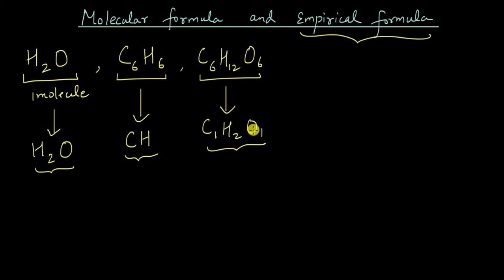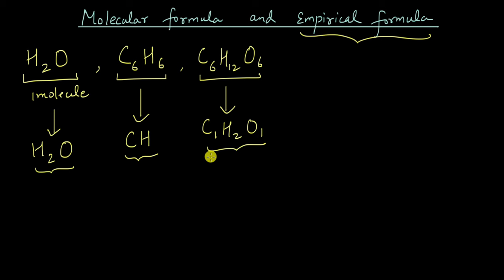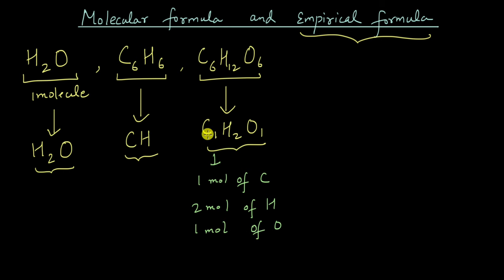What can we do with this empirical formula? Well, one thing we can do is find what percentage by mass of carbon, hydrogen, and oxygen is contained in a sample of glucose. We know that this formula tells me that if I have one mole of carbon, then I will have two moles of hydrogen and one mole of oxygen, because for every atom of carbon, I have two atoms of hydrogen and one atom of oxygen. So if I take 6.022 × 10²³ atoms — one mole of carbon — I will have two moles of hydrogen and one mole of oxygen.